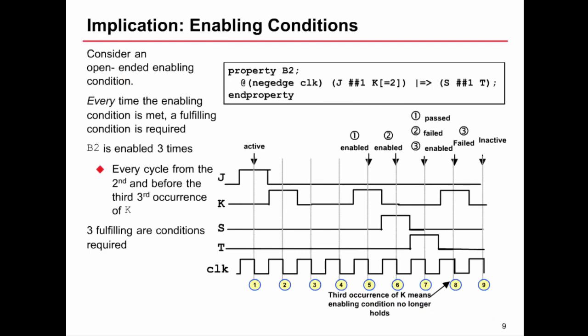To show how enabling conditions are treated differently, we will now switch the left and right hand sides of the implication operator. What we've got now as the enabling condition is the open ended sequence j followed next cycle by two non consecutive occurrences of k. If we observe that sequence or any neg edge at which we observe that sequence being true, we require the sequence s followed by t or the assertion will fail.